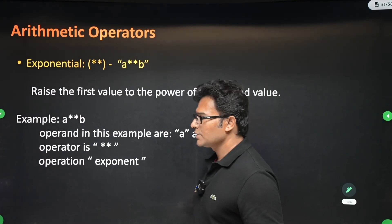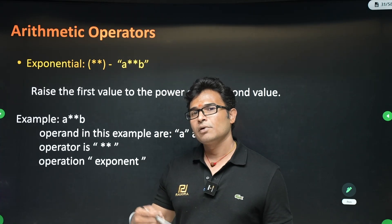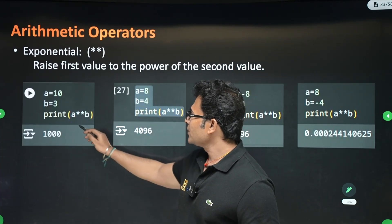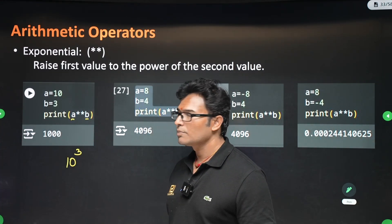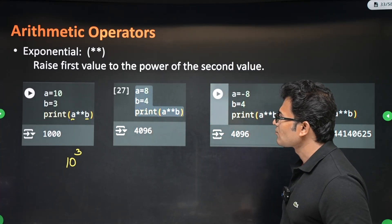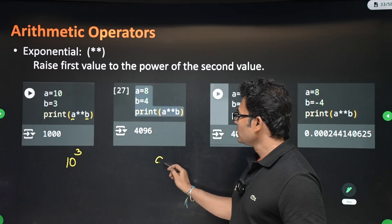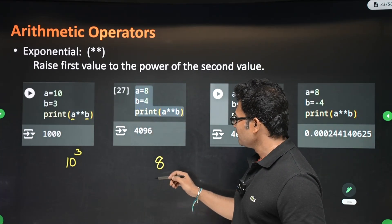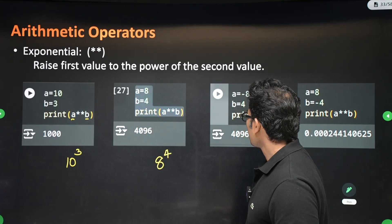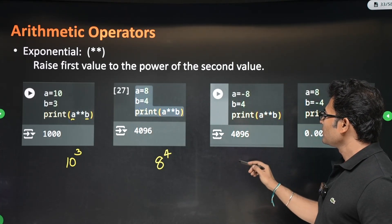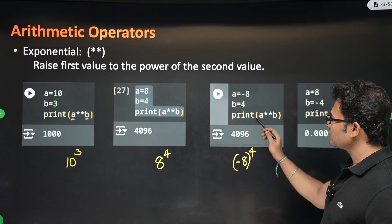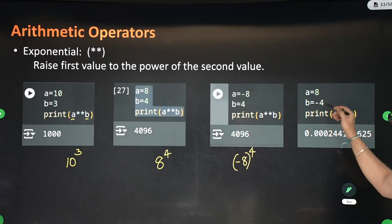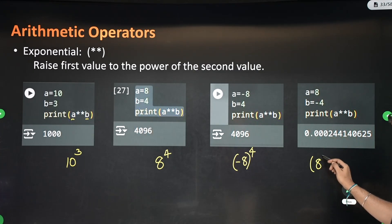Exponentiation means raising one number to the power of another. For example, a exponentiation b means a raised to the power of b — like 10 to the power 3. If a equals 8, b equals 4, then a exponentiation b is 8 raised to the power 4. You can also have minus 8 raised to the power 4, or 8 raised to the power minus 4.